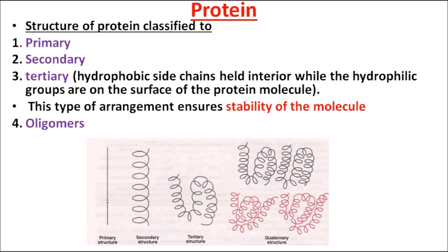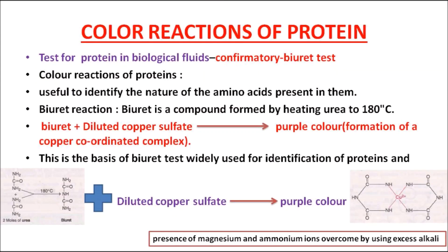For better understanding, imagine you are in a house made up of many rooms. A single wall of a room is considered the primary structure. Within a room, two walls are considered the secondary structure. The entire room forms the tertiary structure, and all the different rooms in a house form the quaternary structure. If an MCQ asks which is the most stable form of the protein structure, the answer is the tertiary form.